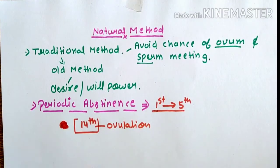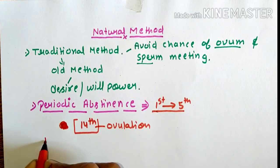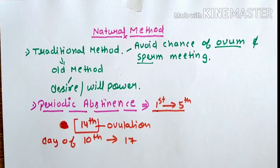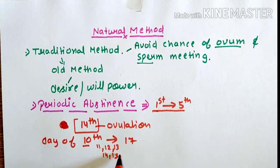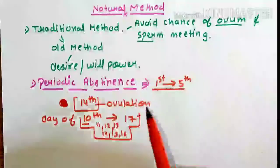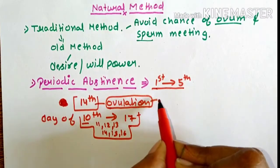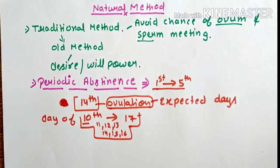During the days when ovulation is most likely to occur, couples should avoid or abstain from coitus from day 10 to day 17. Days 10, 11, 12, 13, 14, 15, 16, and 17 are considered risky days because there is a chance of ovulation during these days. These are the expected days of ovulation, and the chance of fertilization is very high during this period.